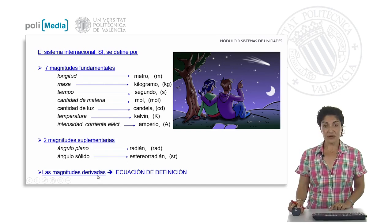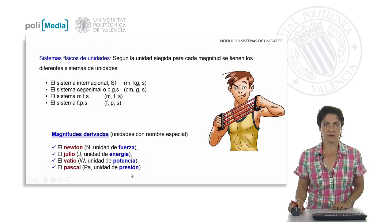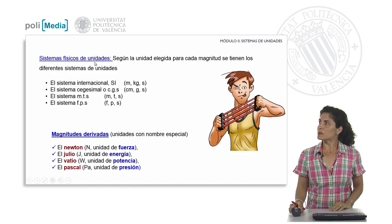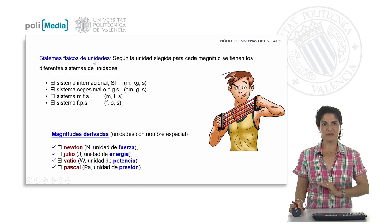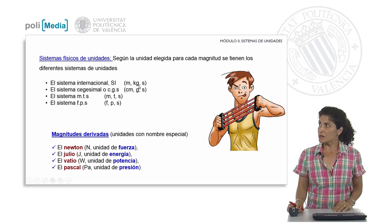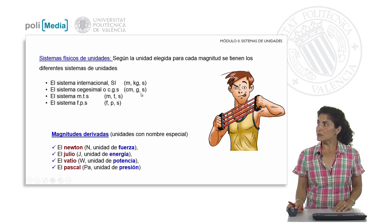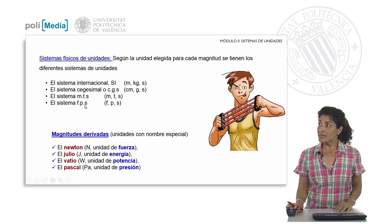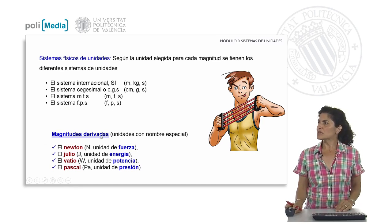The derived quantities are related to the fundamental ones based on the defining equations. For different physical systems, we have different types of unit systems according to the set of units chosen. For example, the international system uses meter, kilogram, second; the CGS system uses centimeter, gram, second; the MTS system uses meter, ton, and second; and the Anglo-Saxon FPS system uses foot, pound, and second. Examples of derived quantities that also have their own names are Newton for force, joule for energy, watt for power, and Pascal for pressure.